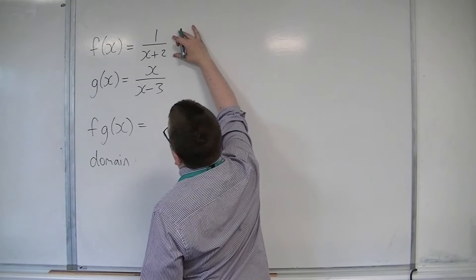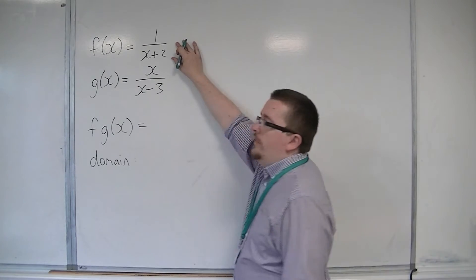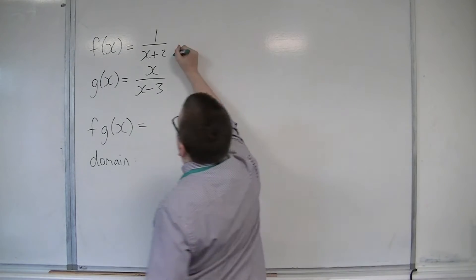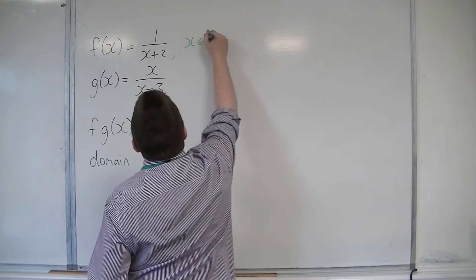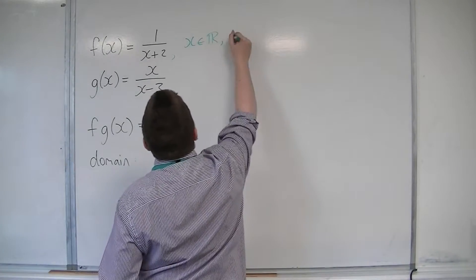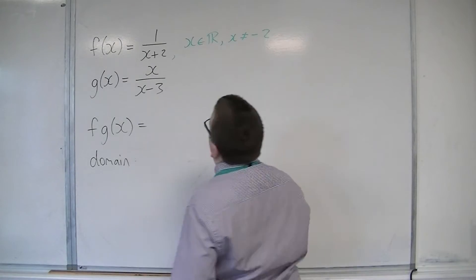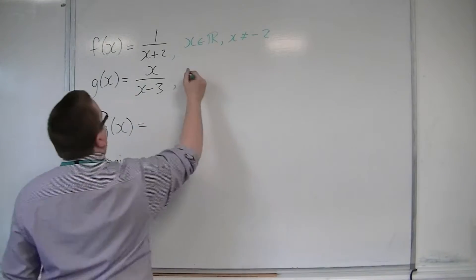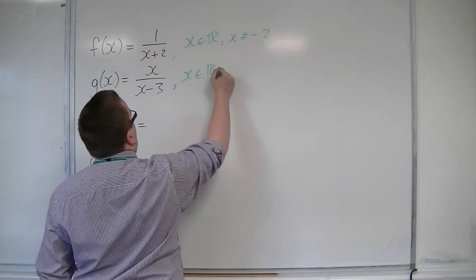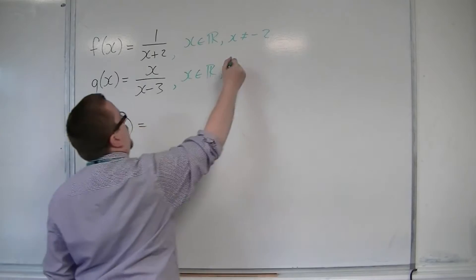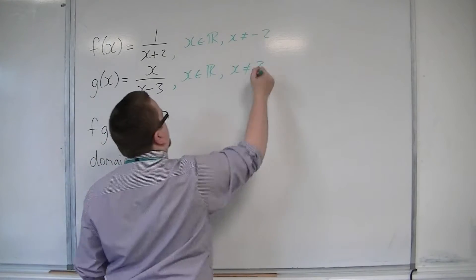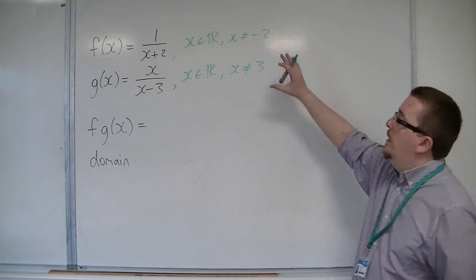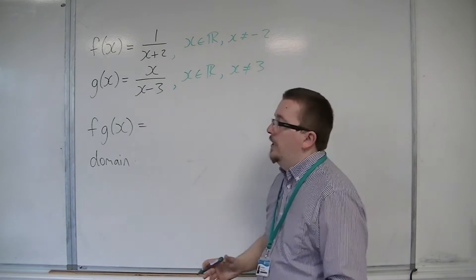If we look at the largest possible domain for this function, then x can belong to the real numbers, except for x equals minus 2 — so x can't be minus 2 for that one. If we look at the second one, x can belong to any real number as long as it's not 3. So those are the two greatest possible domains for those functions.